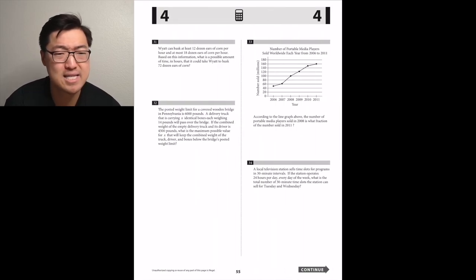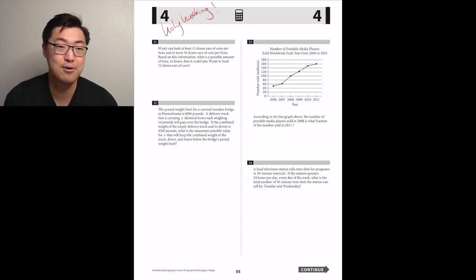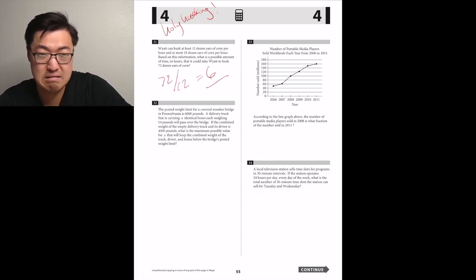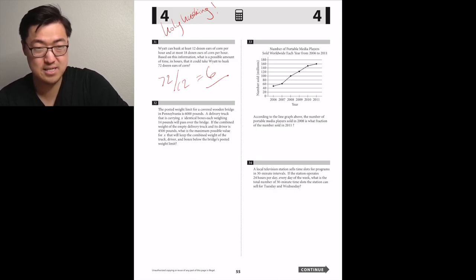Wyatt can husk at least 12 dozen ears of corn per hour, and then at most 18 dozen ears of corn per hour. Based on this information, what is a possible amount of time in hours that it would take Wyatt to husk 72 dozen ears of corn? I'm just going to say he goes at the slow rate, so then six.